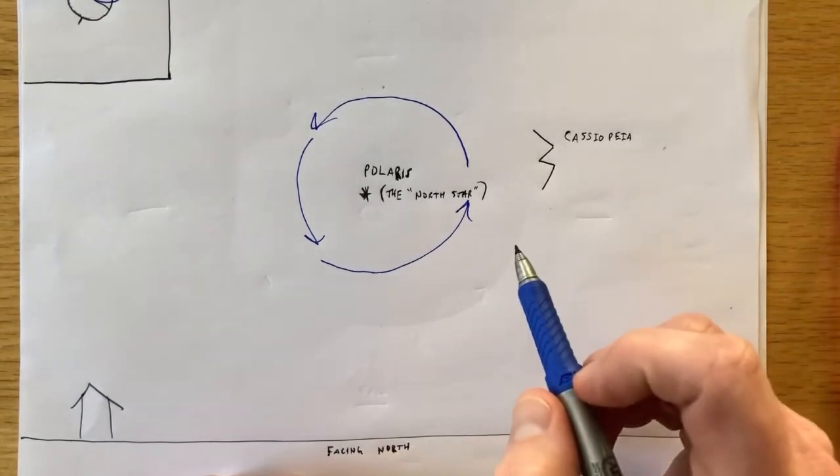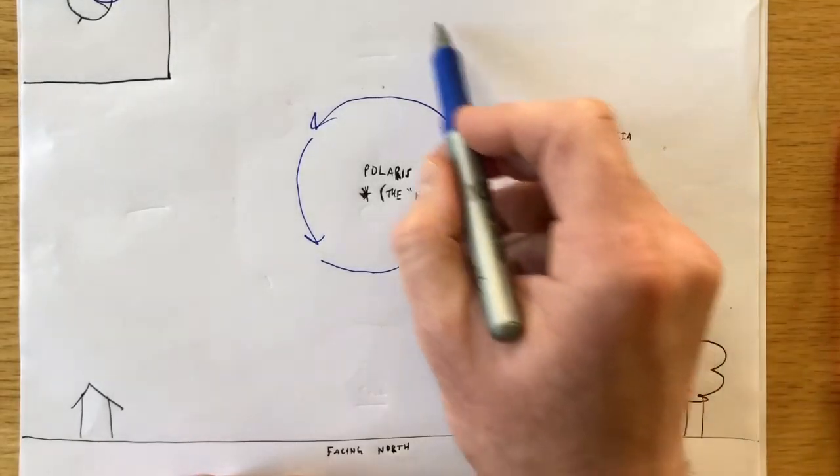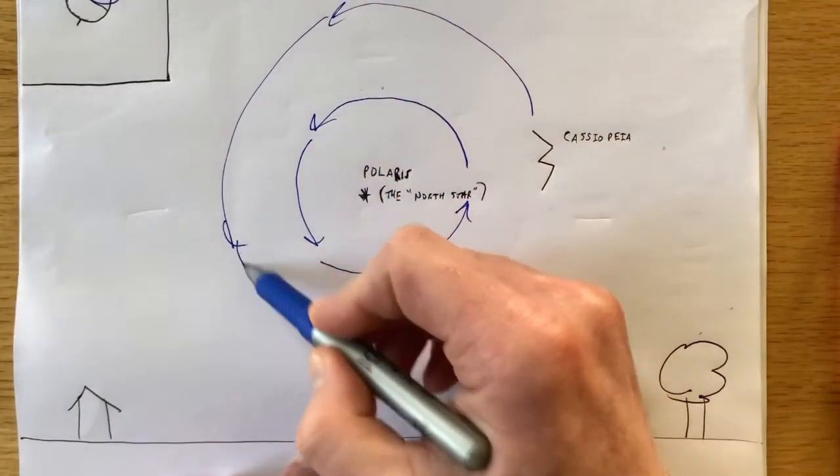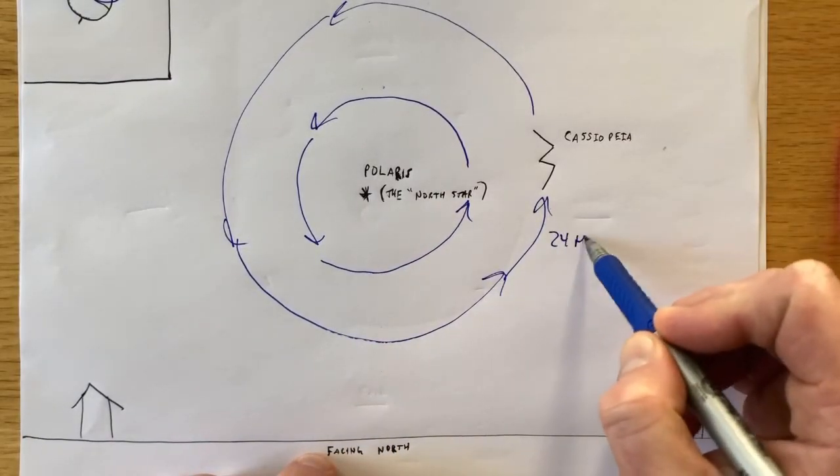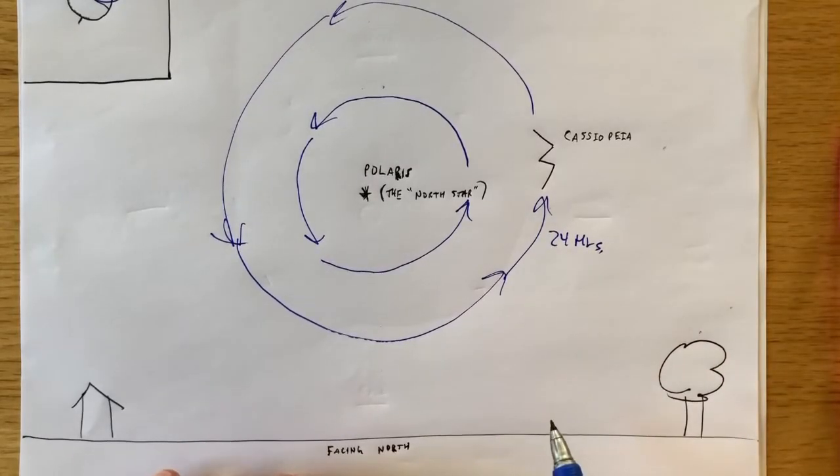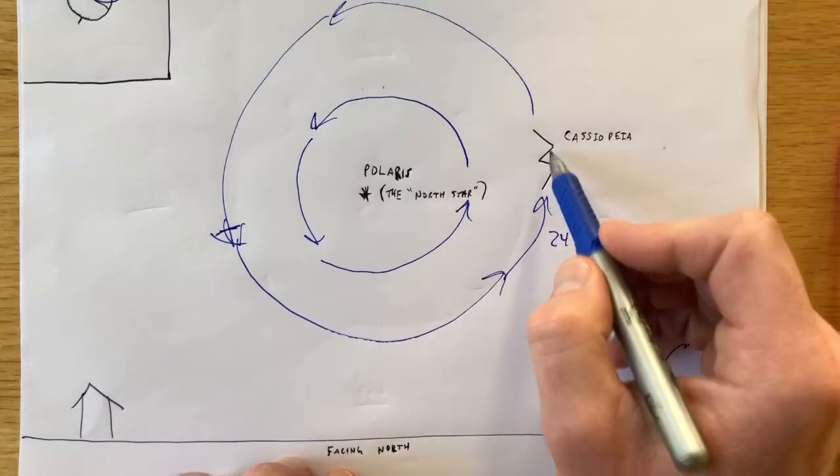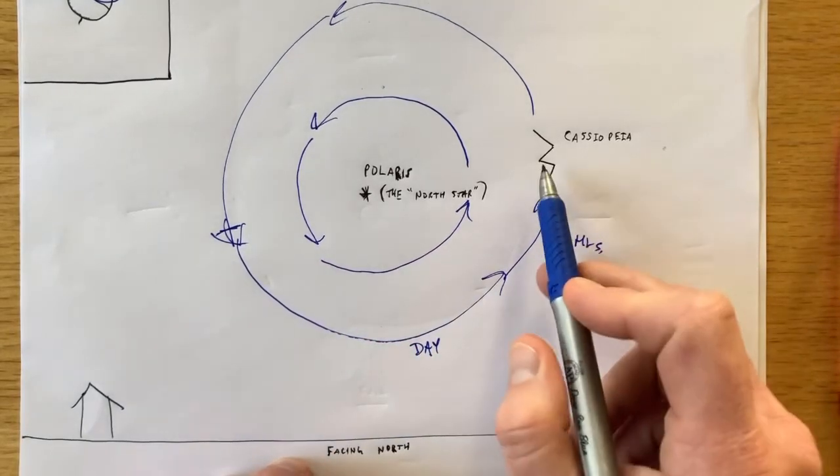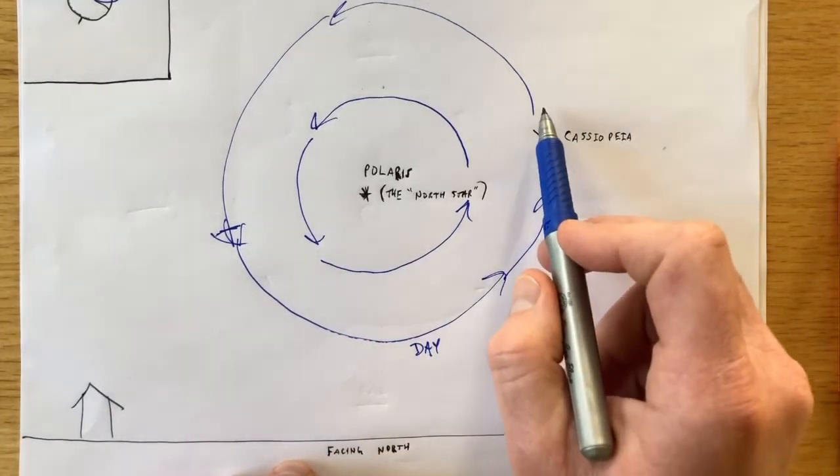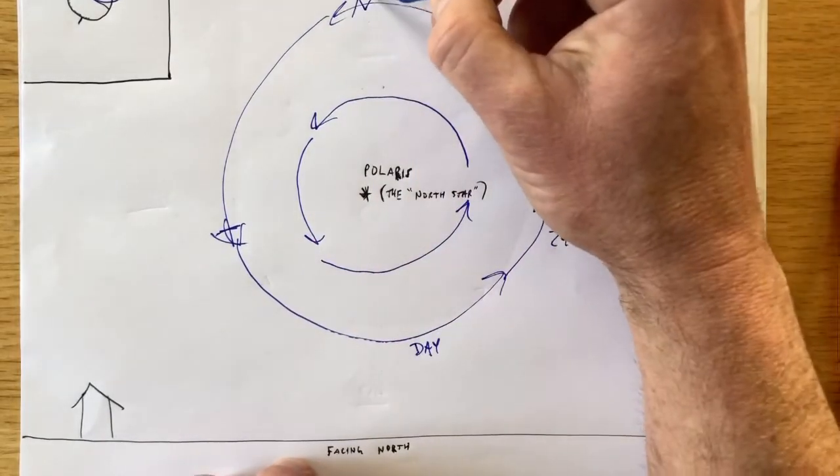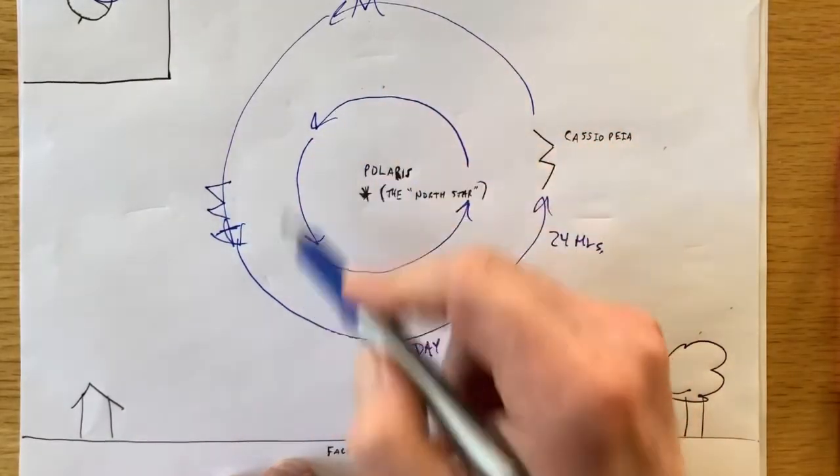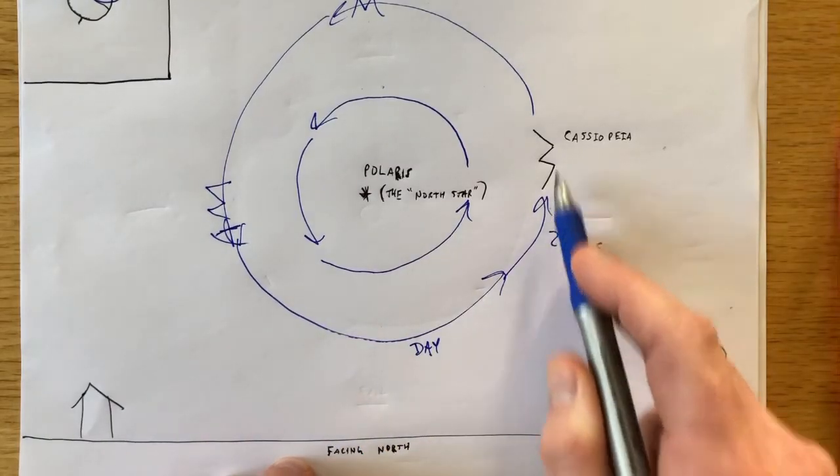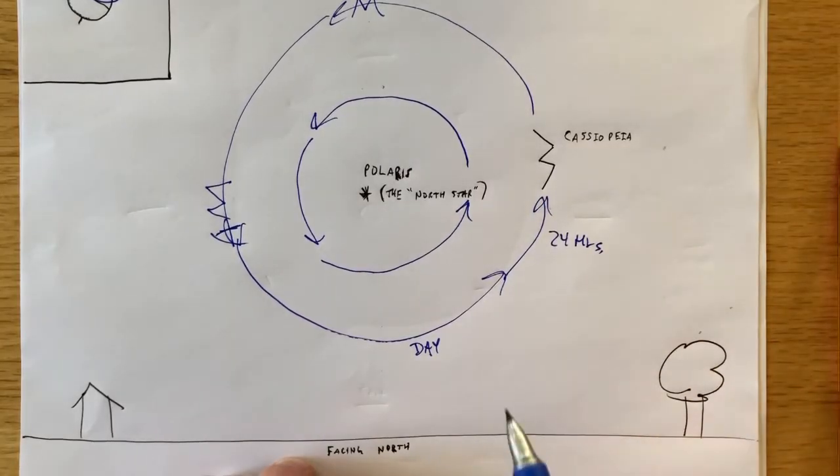So in 24 hours, if we sat outside staring north, we'd see Cassiopeia go all the way around once. Here's the problem though. Half of that time, the sun is up. So I'm going to mark here. This is night, and this is day. So I'm not going to see any of this path. Basically, if I watched all night long, I would see Cassiopeia rotate counterclockwise. So at midnight maybe, she'd be sitting up here. Sunrise, she's sitting way over here. Then the sun comes up, and I can't see her, but she's continuing to move. And then when the sun sets, suddenly she's right back over here.